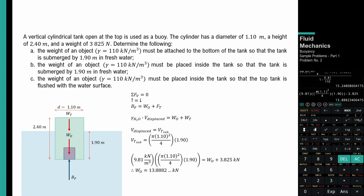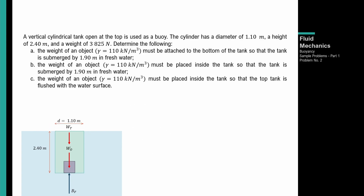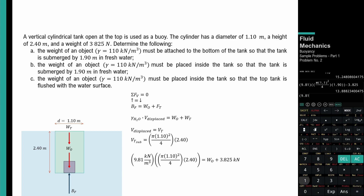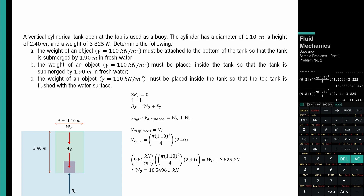Mas magaan lang yung kailangan kapag nasa loob dahil mababawasan yung required buoyant force. Kapag ganito yung configuration — nasa loob ulit ng tank — volume displaced ay yung total volume ng tank. So: pi D² over 4 times total height na 2.4 meters. Therefore: 9.81 × π × (1.10)² / 4 × 2.4 minus 3.825. Weight ng object para flushed yung top ng tank sa water surface ay 18.5496 kilonewtons.